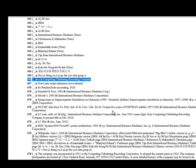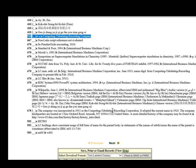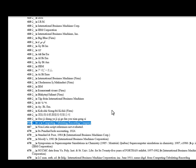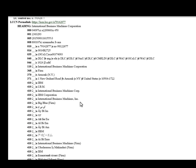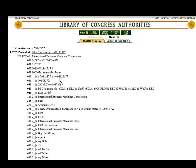Sources they looked at when they were establishing these headings. The 300 fields are just information about IBM itself — where it's based and that it's a firm.